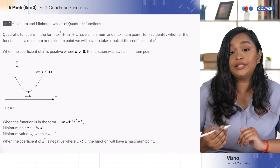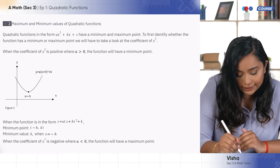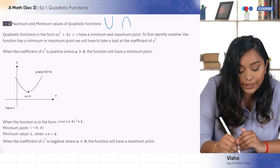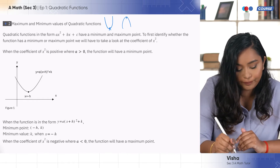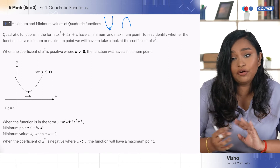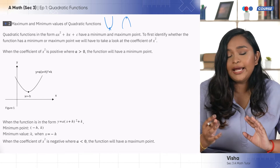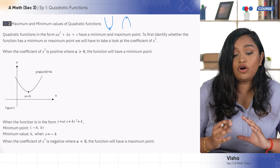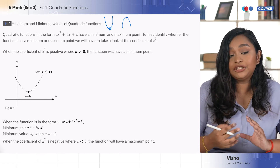When we have a quadratic function, it will be in the shape of a parabola. A parabola is basically a curve. When we have a curve, we actually have a smiley face and we have a sad face. When we have a smiley face, you would have a minimum point. And when we have a sad face, we would actually have a maximum point. When the coefficient of x squared is greater than zero, the function will actually have a minimum point.